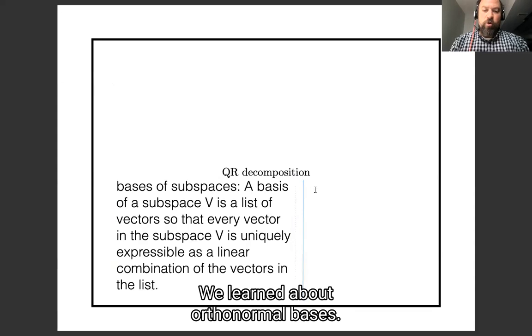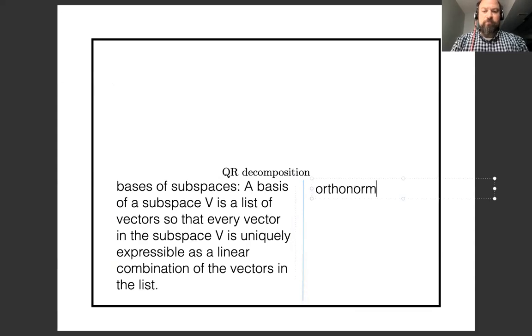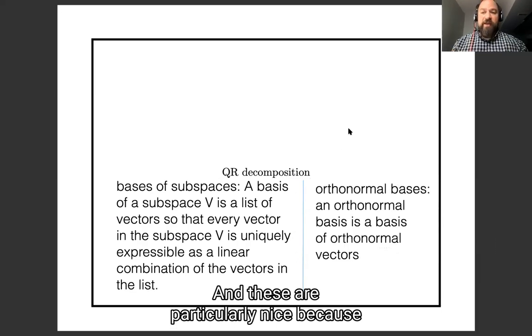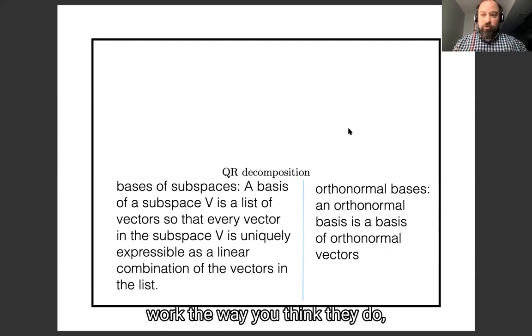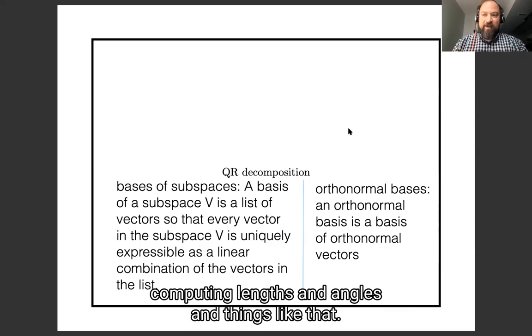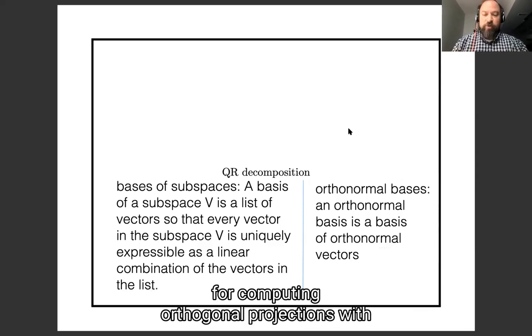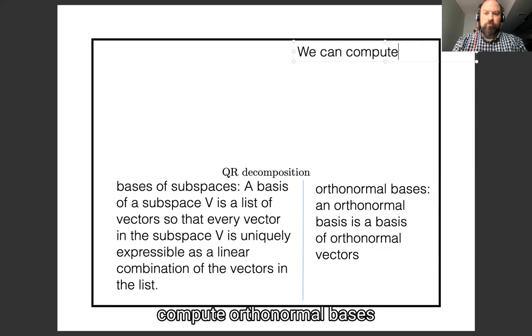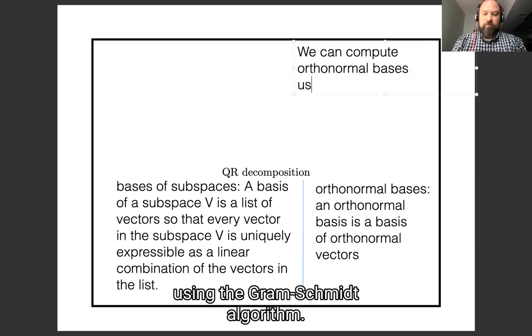First, we learned about orthonormal bases. An orthonormal basis is a basis of orthonormal vectors. And these are particularly nice because all your geometric computations work the way you think they do, computing lengths and angles and things like that, and they are very efficient for computing orthogonal projections with. And we learned that we can compute orthonormal bases using the Gram-Schmidt algorithm.